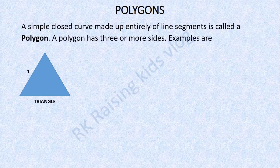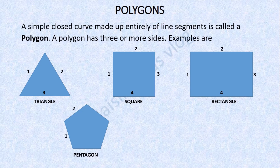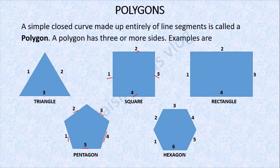Next is polygons. A simple closed curve made up of entirely line segments is called a polygon. A polygon has three or more sides. Examples: triangle — it has three sides; square — it has four sides; rectangle — it also has four sides but only two pairs of equal sides; pentagon — it has five sides; hexagon — it has six sides. These are the polygons.